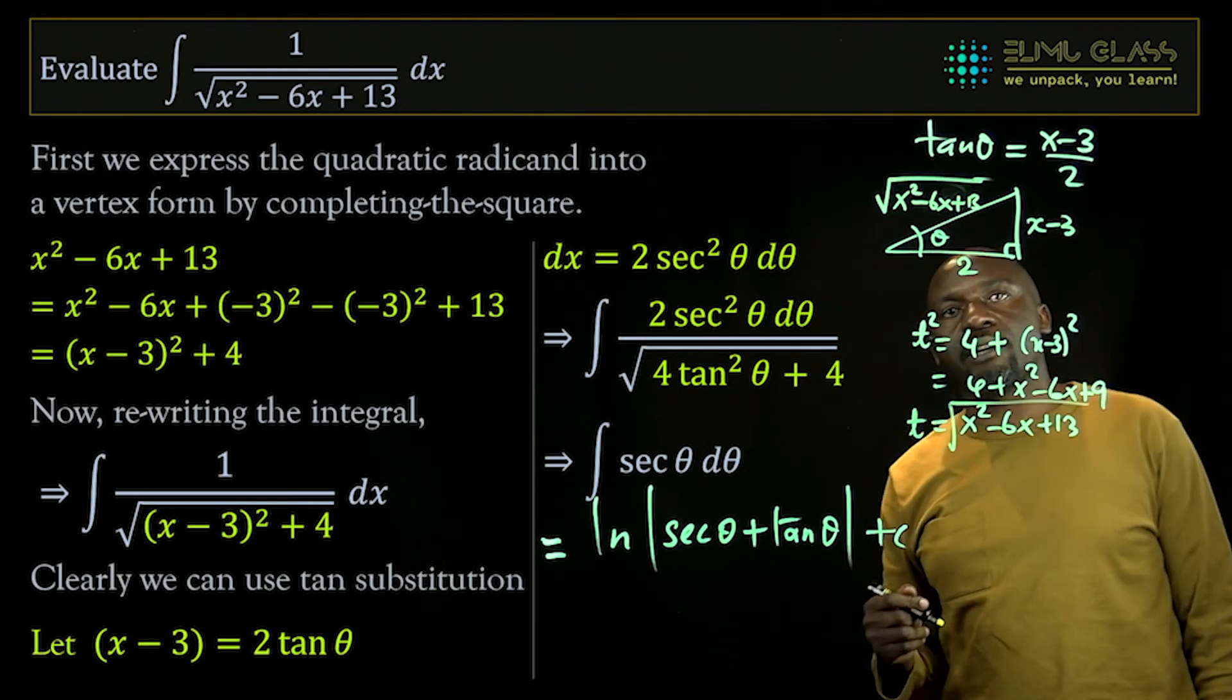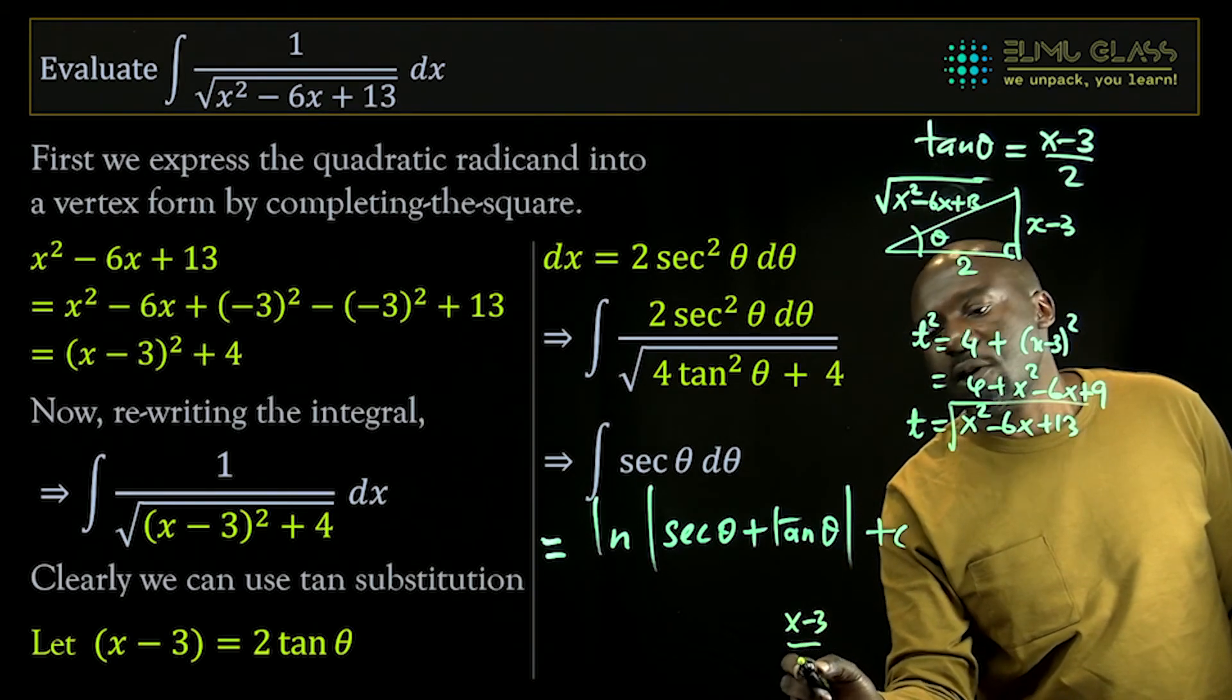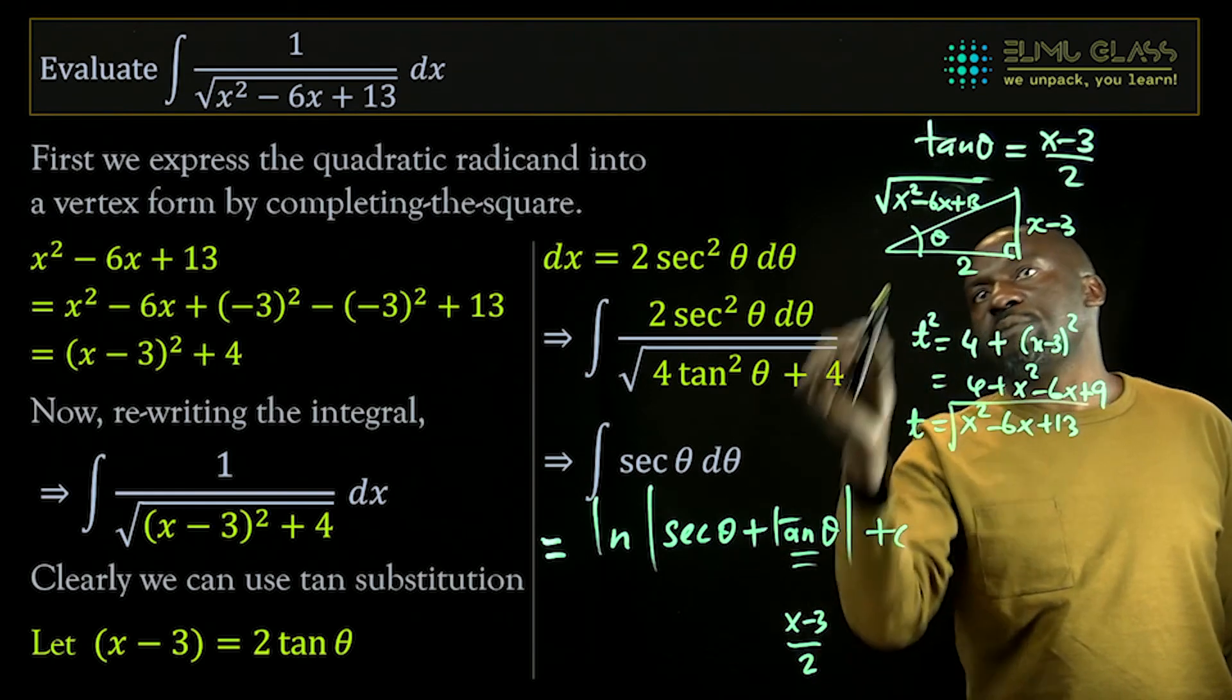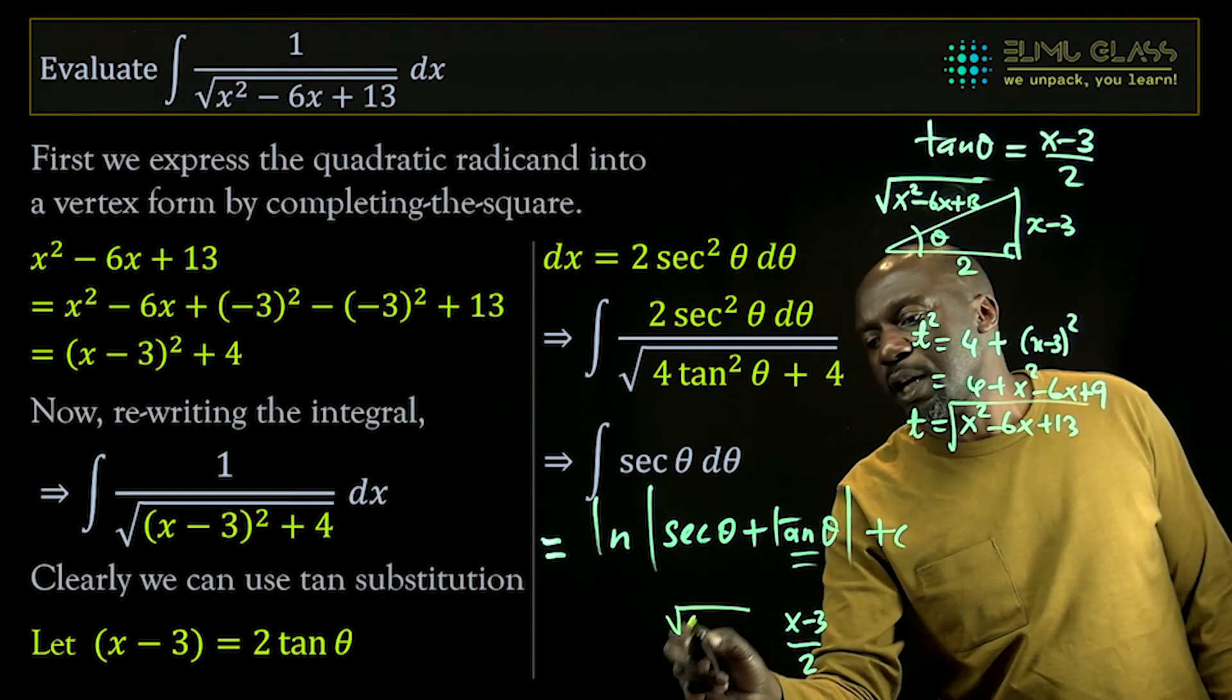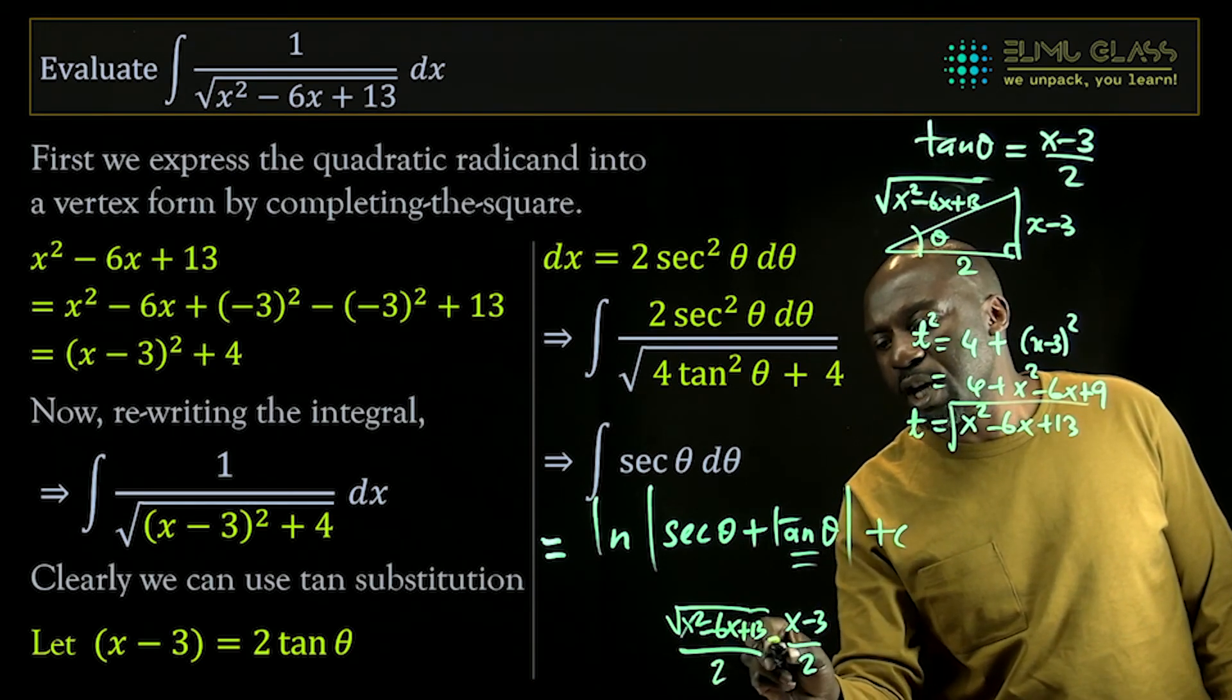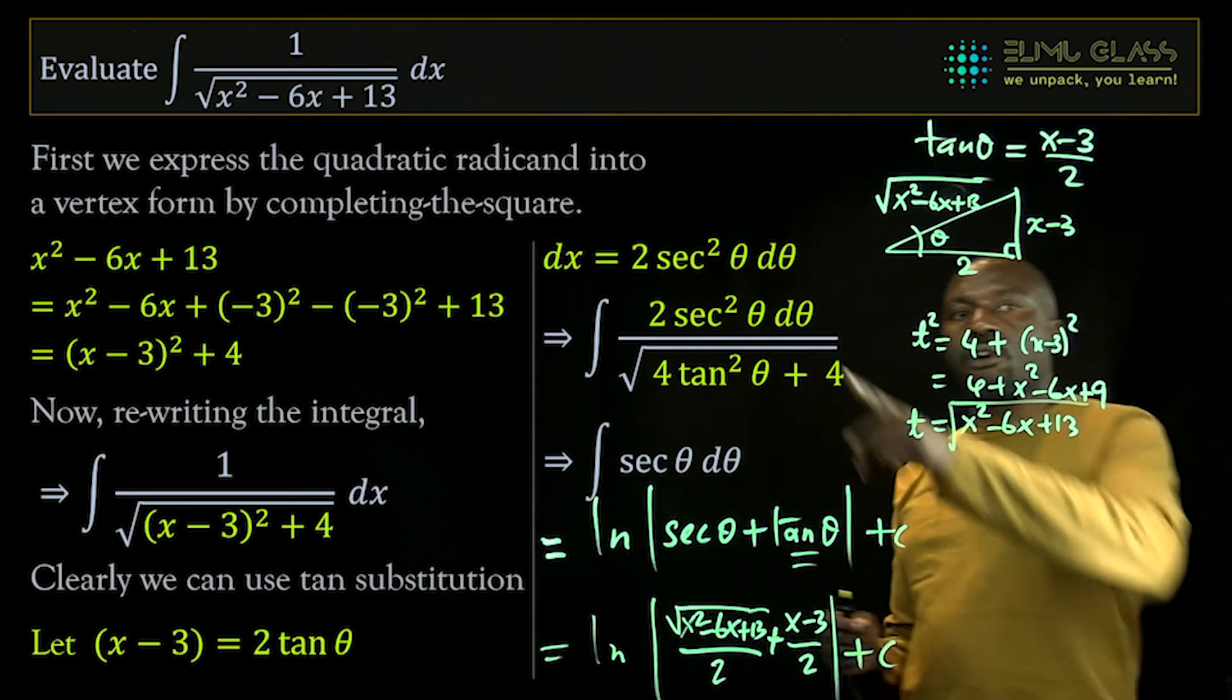That is the hypotenuse of my right angle triangle. I know tan of theta is x minus 3 over 2, but sec is 1 over cos. Cosine is adjacent over hypotenuse, so sec must be hypotenuse over adjacent. So this is going to be the root of x squared minus 6x plus 13, everything divided by 2, and we are adding them with that, ln. This becomes our answer for that integral.